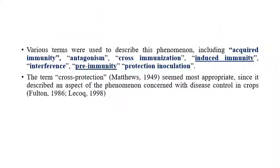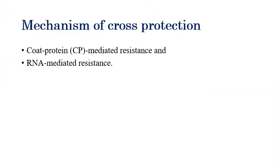Various synonyms have been described for the cross protection phenomenon, including acquired immunity, antagonism, cross immunization, induced immunity, interference, pre-immunity, and protection inoculation. The most widely used terms are induced immunity and pre-immunity, but cross protection is considered the most appropriate and suitable term for this phenomenon concerning disease control of crops.